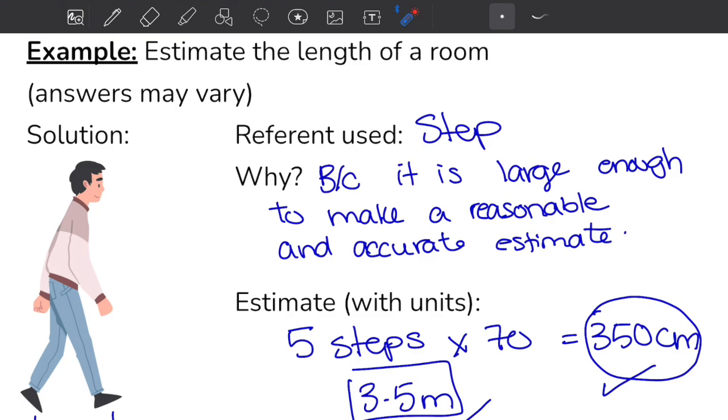So in a nutshell, how do we estimate linear measures? Choose a referent that makes sense and then measure how long that referent is. So for me, one step was 70 centimeters. Count how many of those you have. For me I had five steps. Multiply it by how long your reference is, and that's your answer. I recommend trying this with different things. Try it with the length of your phone, calculator, and so on.